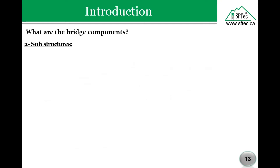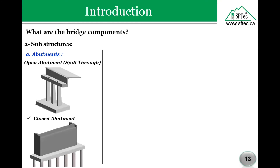For substructures, we have different elements. The first element is the abutment, which acts as the end vertical support. Abutments also retain the roadway backfill and resist lateral movement of earth's backfill. There are two types of abutments: open abutments, also called build-through, and closed abutments. If the height of the bridge is high, the open abutment is preferred because the closed one would have a very heavy weight and huge cross-section.